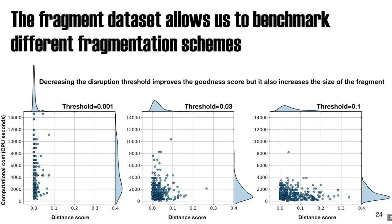With the benchmark set of roughly 300,000 fragments, we can benchmark the scheme to determine the appropriate threshold. Using a very small threshold gives fragments very close to the parent but results in larger, computationally expensive fragments. A threshold that's too big, like 0.1, gives many small fragments but too many with a high distance score. A threshold of 0.03 results in the most fragments in the lower-left quadrant—not too expensive and with a low distance score.